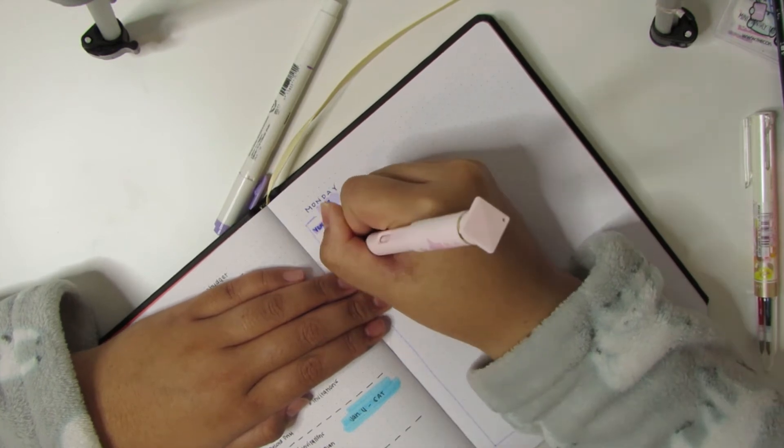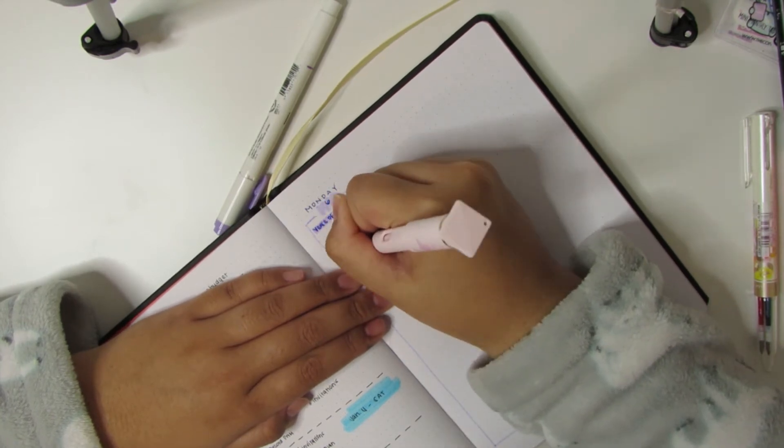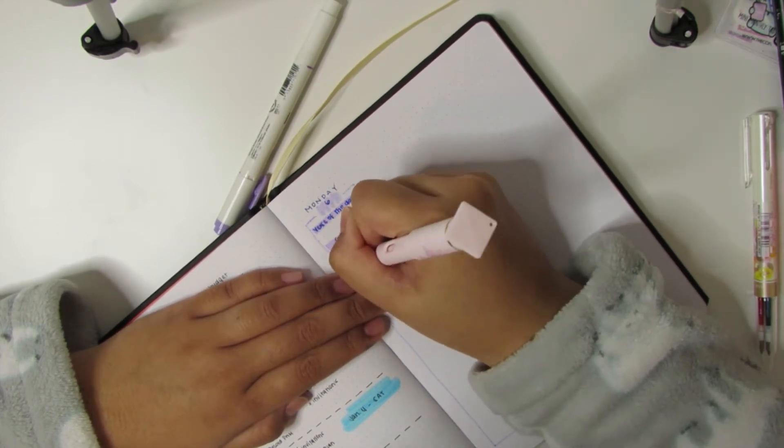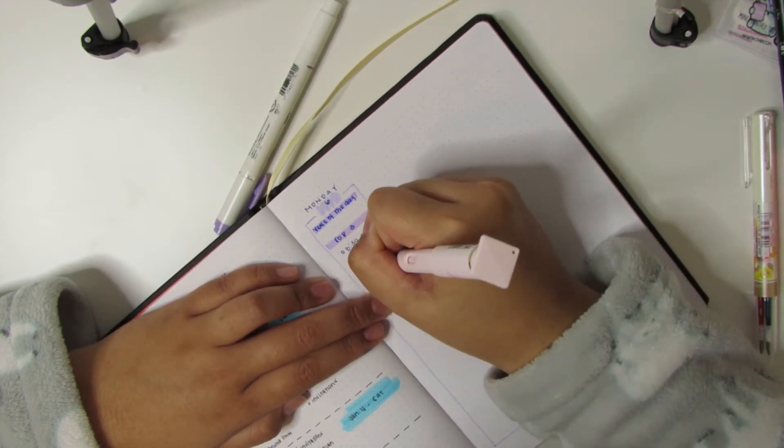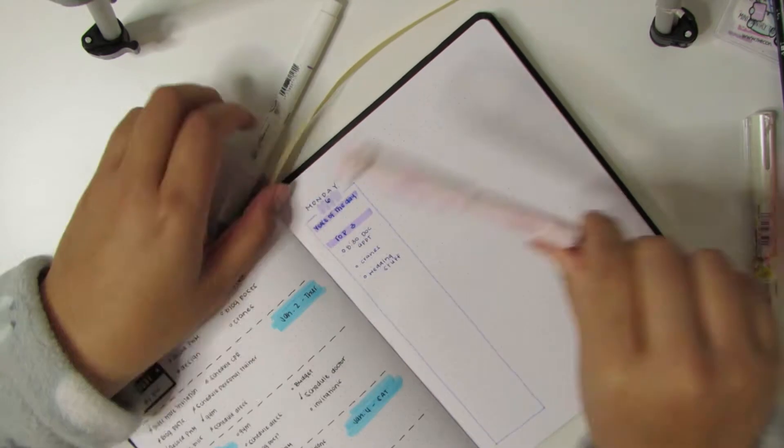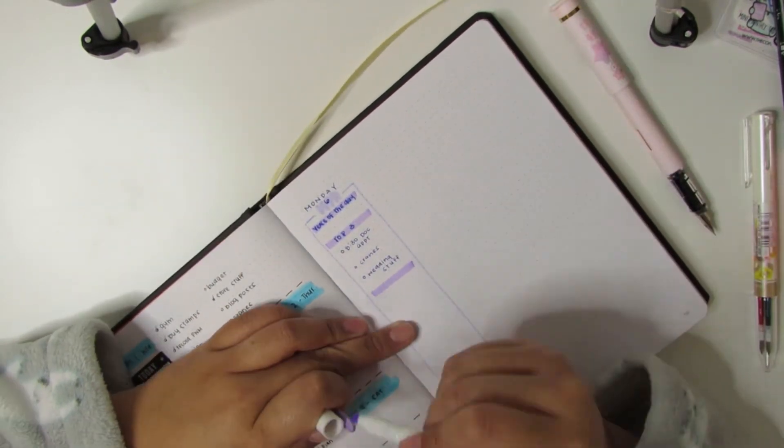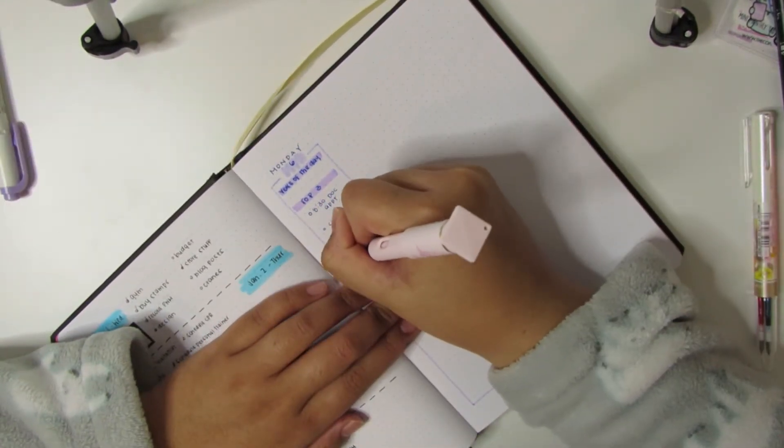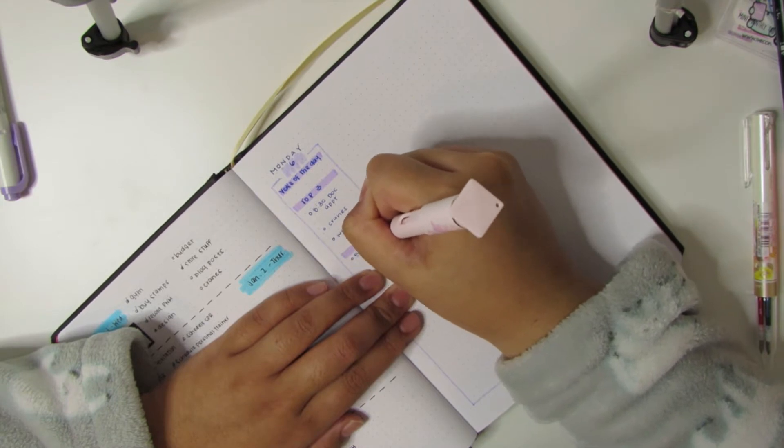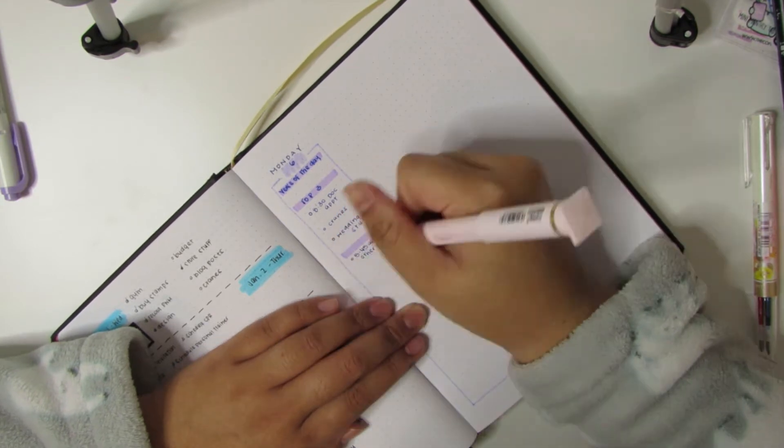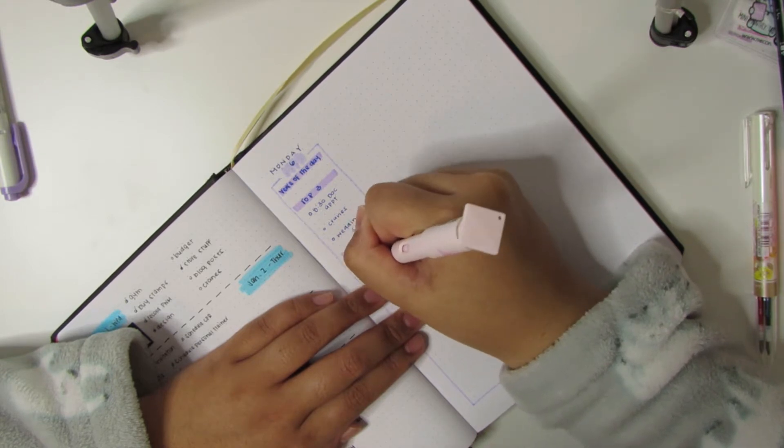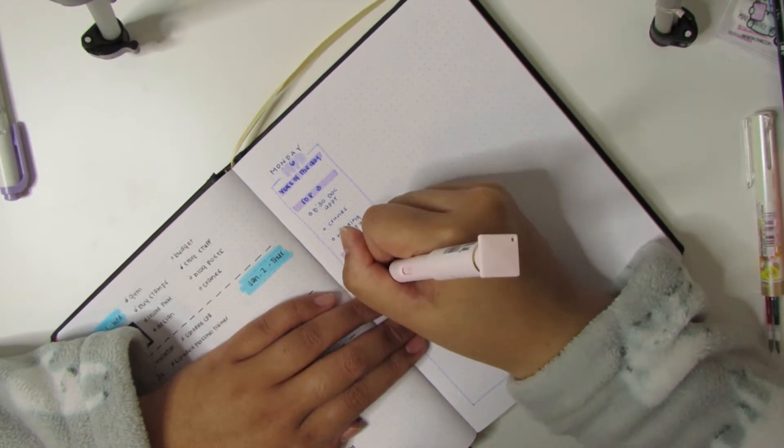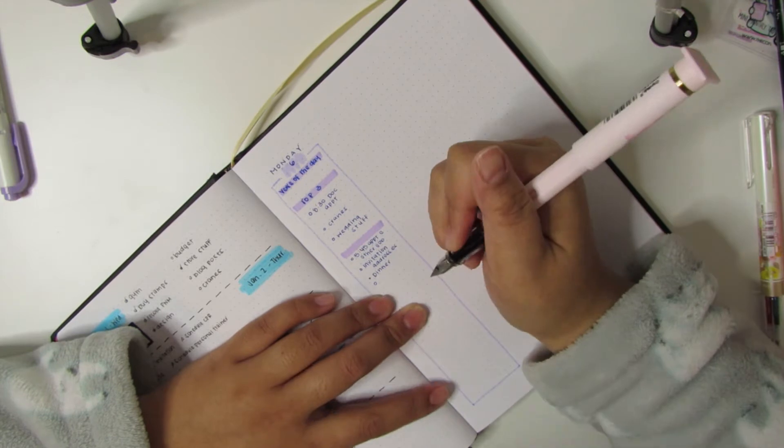It helps me to prioritize certain things. I create a top three, so those are the top three things that I need to get done or like three appointments that I have during the day that are very important. Then I put like a little section where it's like littles or shenanigans, just the smaller things that I want to get done throughout the day.